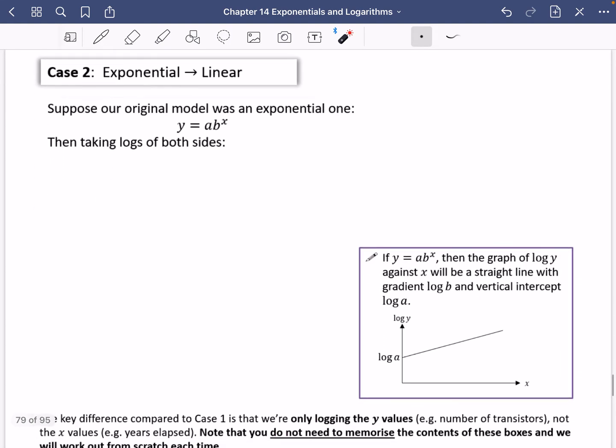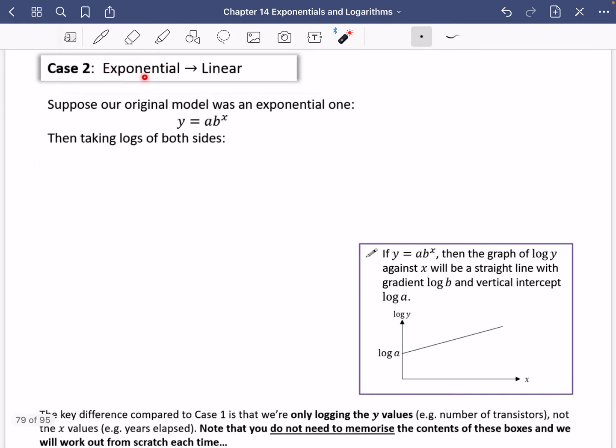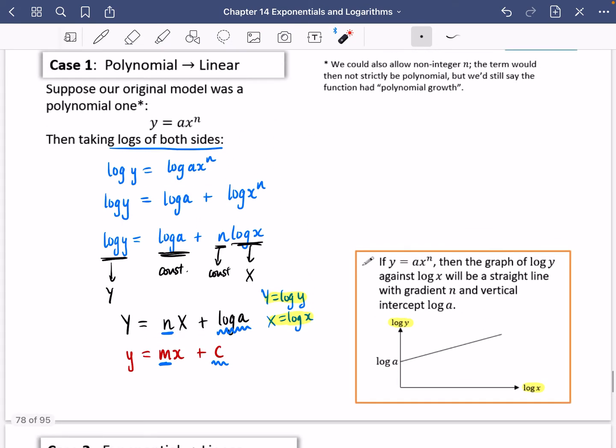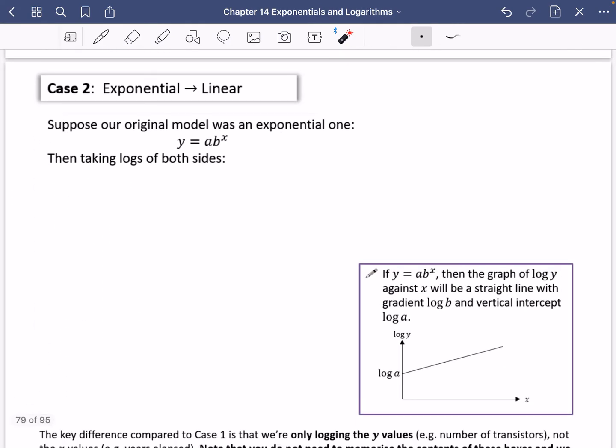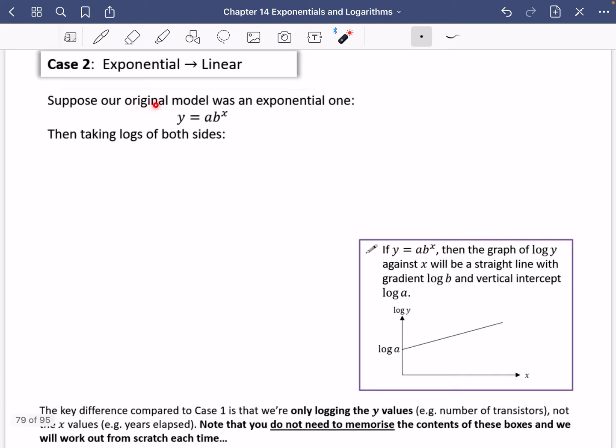So the second case is if we have something that is an exponential one, and we want to make it become linear. So let's just remind us, if this was polynomial because we had x in the base, this one is exponential because we've got x in the power. And it may not be these letters a and b, but as soon as you see that you've got x in the power, we know it's exponential.